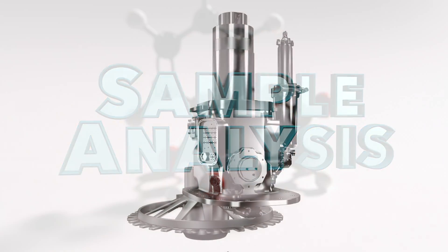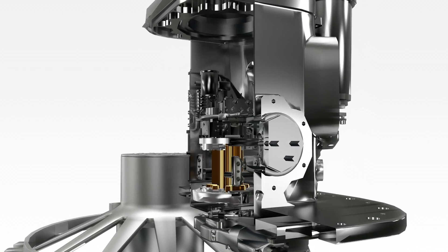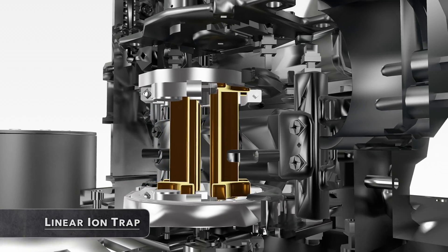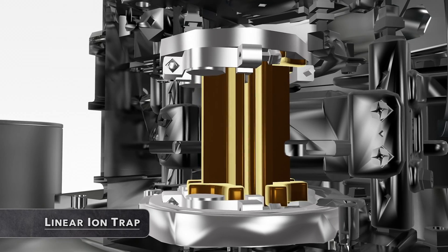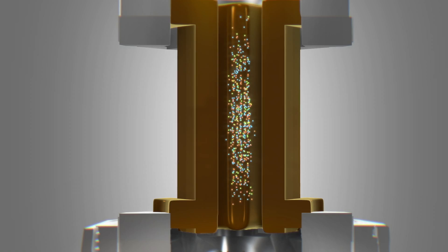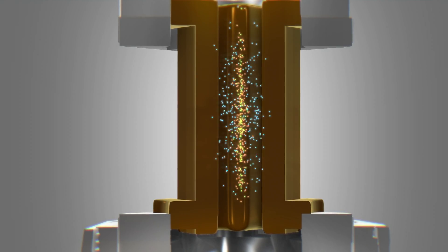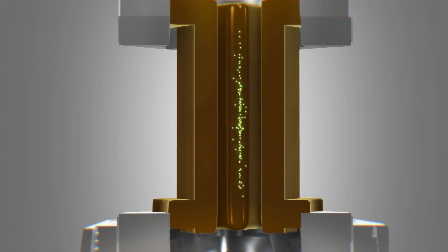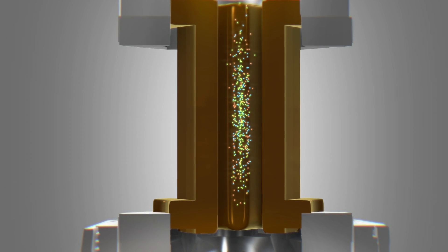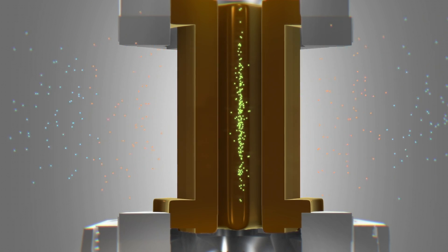MOMA's linear ion trap is another first for the red planet. It will scan for the fingerprints of life by fusing techniques normally confined to laboratories on Earth. One technique, called SWIFT, repeatedly ejects unwanted molecules from the trap. Over time, this builds up molecules of interest, improving detection.